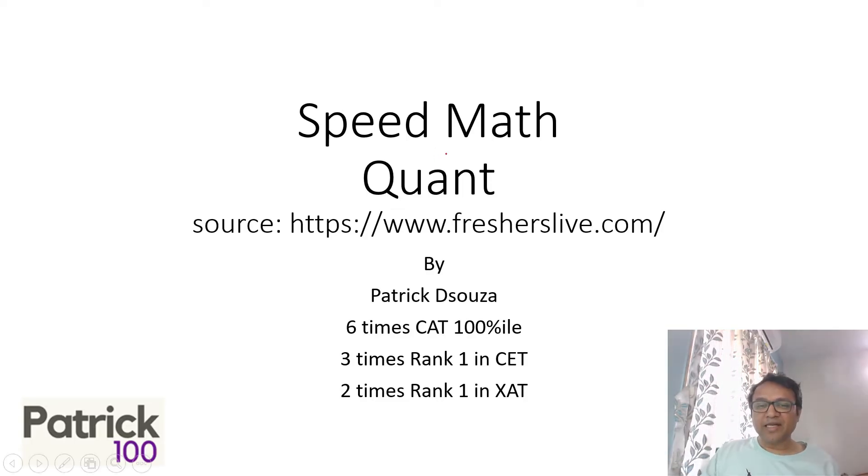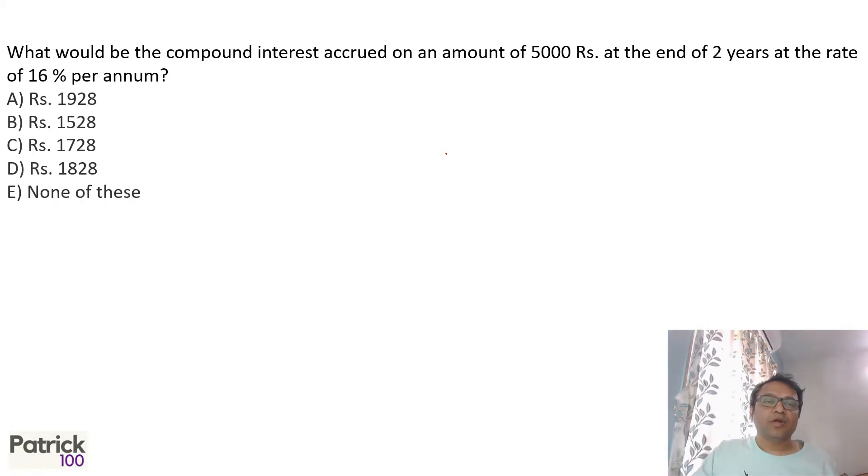Hi, so you're looking at speed mathematics. Questions on how to solve things fast. So compound interest on 5000 for two years, you can do it vertically. What is the first year? First year the interest is 16 percent of 5000. I know 16 times 5 is 80, so 800 is the first year interest, total 5800.